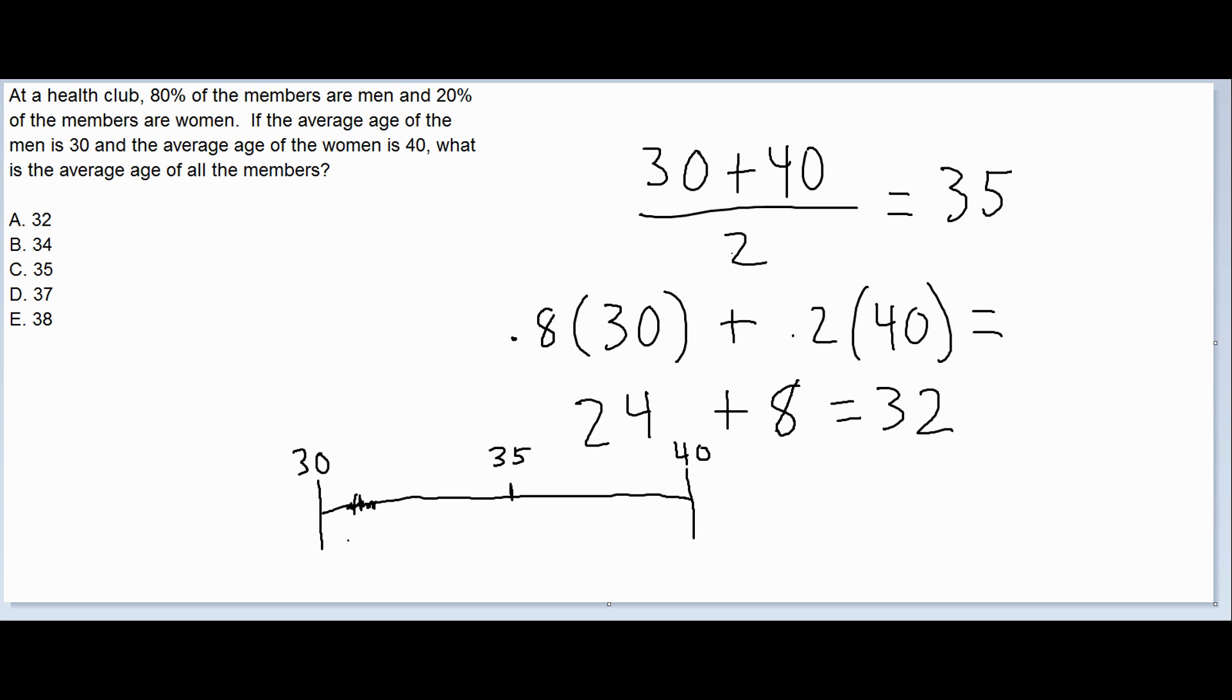So if we think about, if we had just started with a group of men who have an average age of 30, then obviously the entire average for that group would be exactly 30. When we add the women though, it'll have the effect of pulling that overall average toward the women's average. But it's not going to pull it that far because only 20% of the group are women.